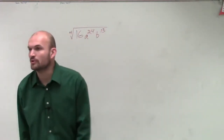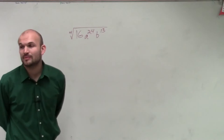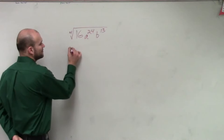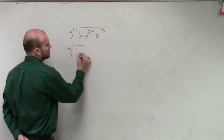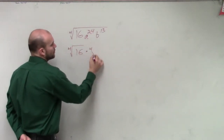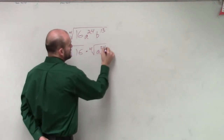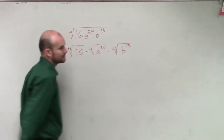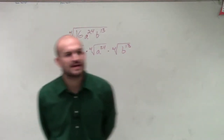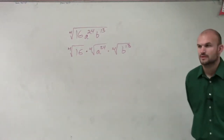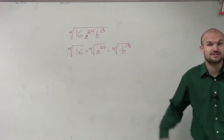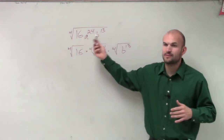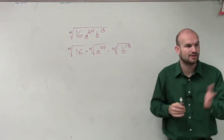So let's just go through and work this out. The first thing we're going to want to do is break it up by applying the product rule of radicals. By applying that rule, I'm going to have the fourth root of 16, times the fourth root of a to the 24th, times the fourth root of b to the 13th. Does everybody understand that first step?